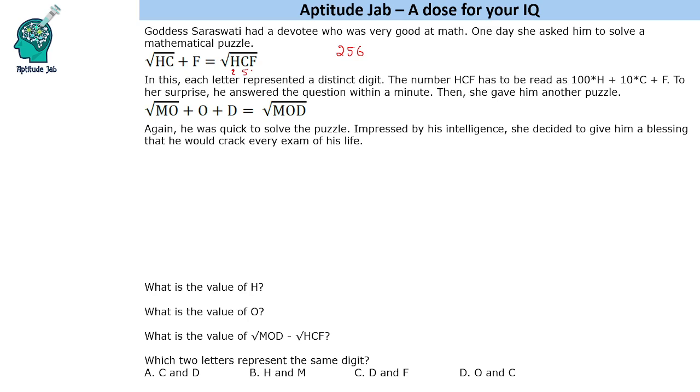So H is 2, C is 5 and F is 6 and it will be under root 16. So like this you have to read the number. Now it is given that to her surprise he answered the question within a minute and then she gave him another puzzle. So we have to solve both these in order to answer the questions.